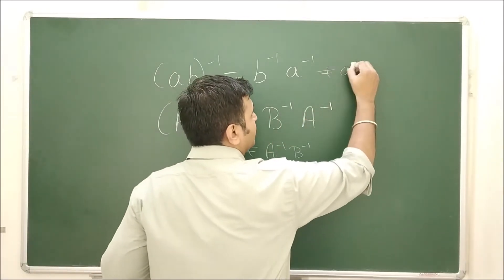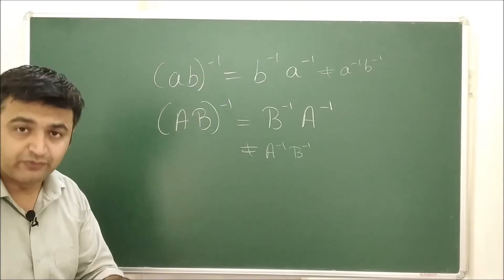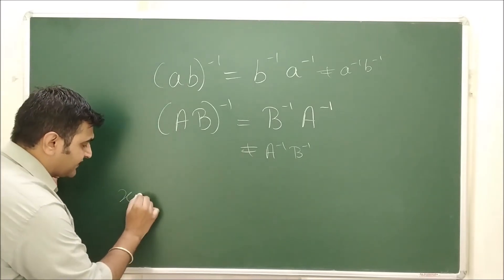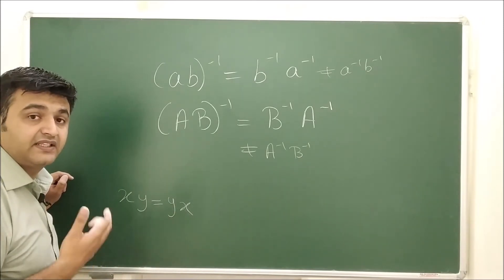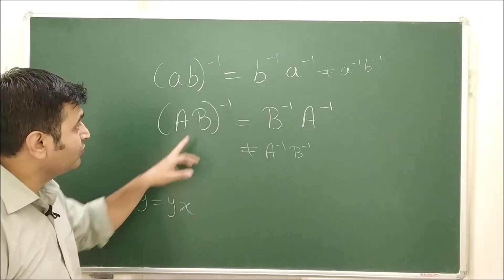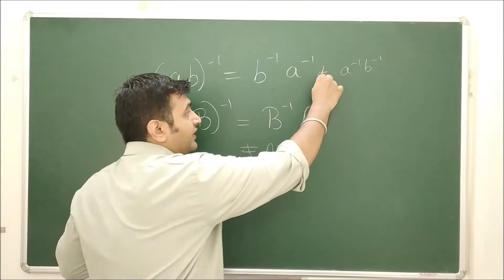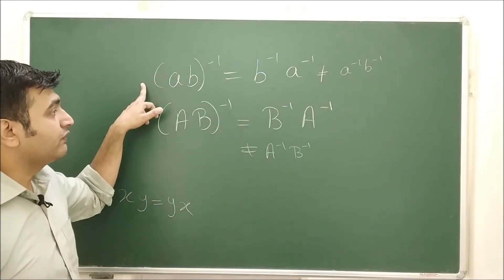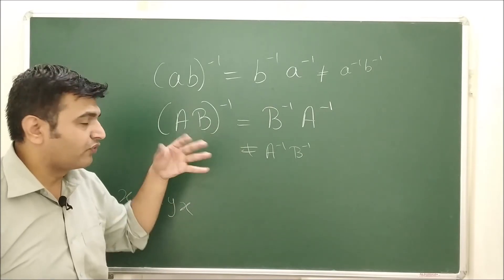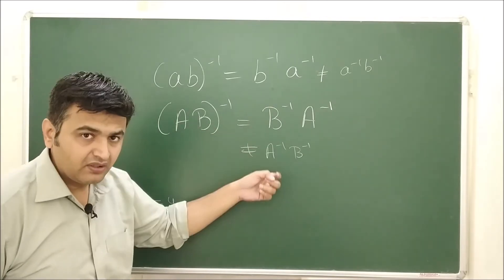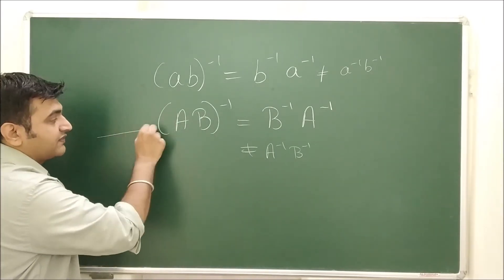This is not equal to A⁻¹B⁻¹ in general. For those who know the concept of abelian groups: a set is commutative if XY = YX for all X, Y in the set. If it is commutative, then A⁻¹B⁻¹ would equal (AB)⁻¹, but for non-commutative cases they are not equal. So I should look for a non-commutative example — for diagonal or scalar matrices they may be equal, otherwise they need not be.